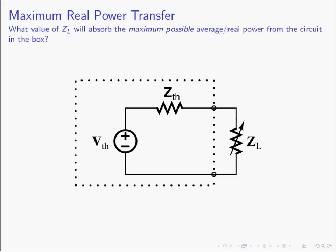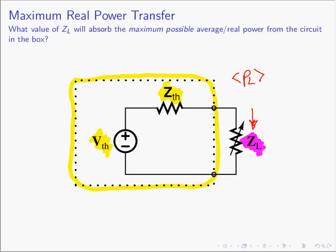Let's set up the problem immediately. Here we have a Thevenin equivalent circuit in the box. This is a generic solution, but it's applicable because Thevenin said that any linear system can be represented this way. So if we have a system of sinusoidal voltage sources and impedances, there exists a sinusoidal source Vth in series with an impedance Zth which will act equivalently. We have a load impedance Z sub L that we can change, and the question is: how do I choose Z sub L such that the average real power in this load is maximized?